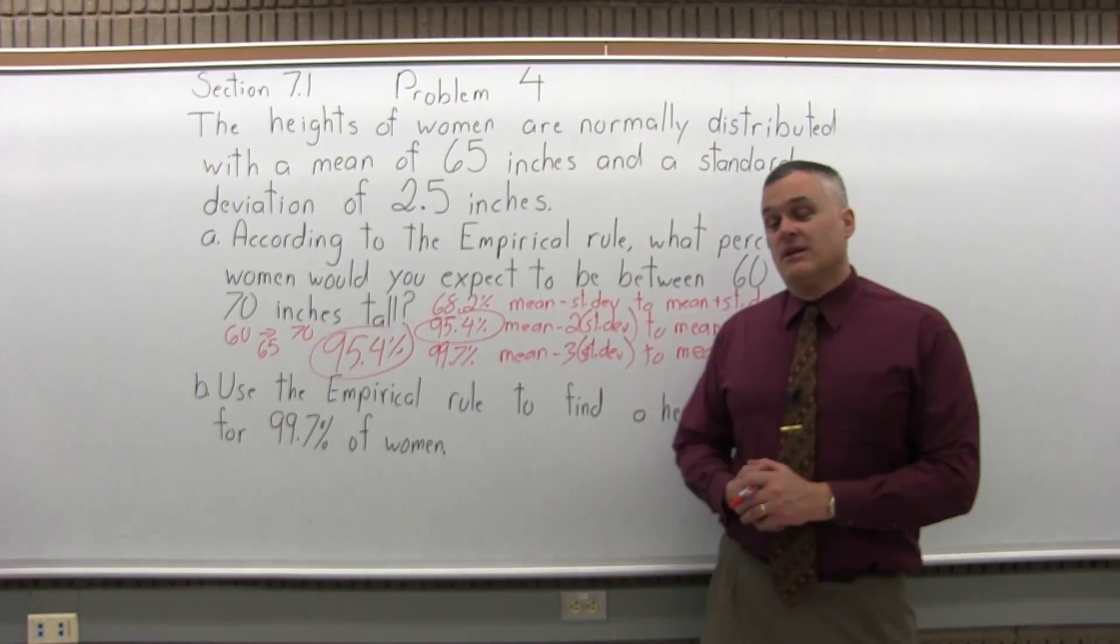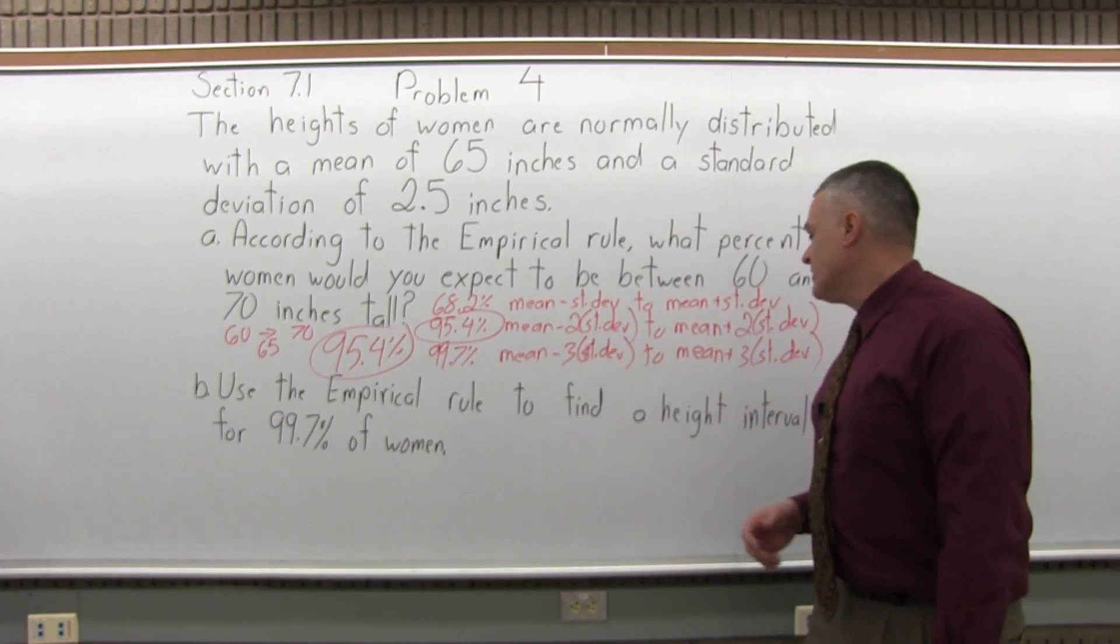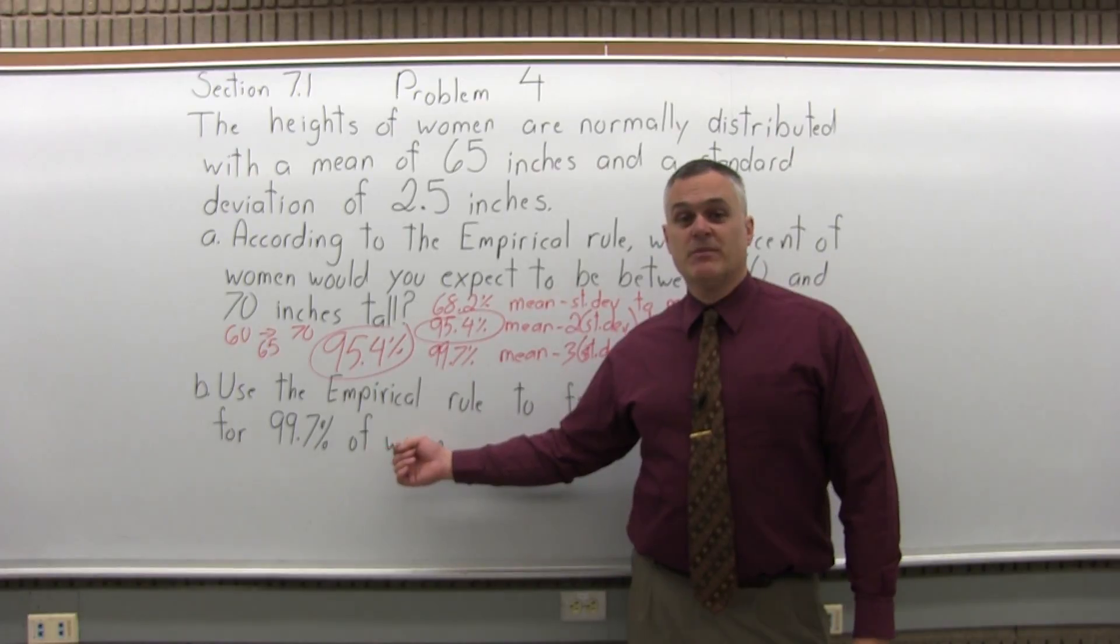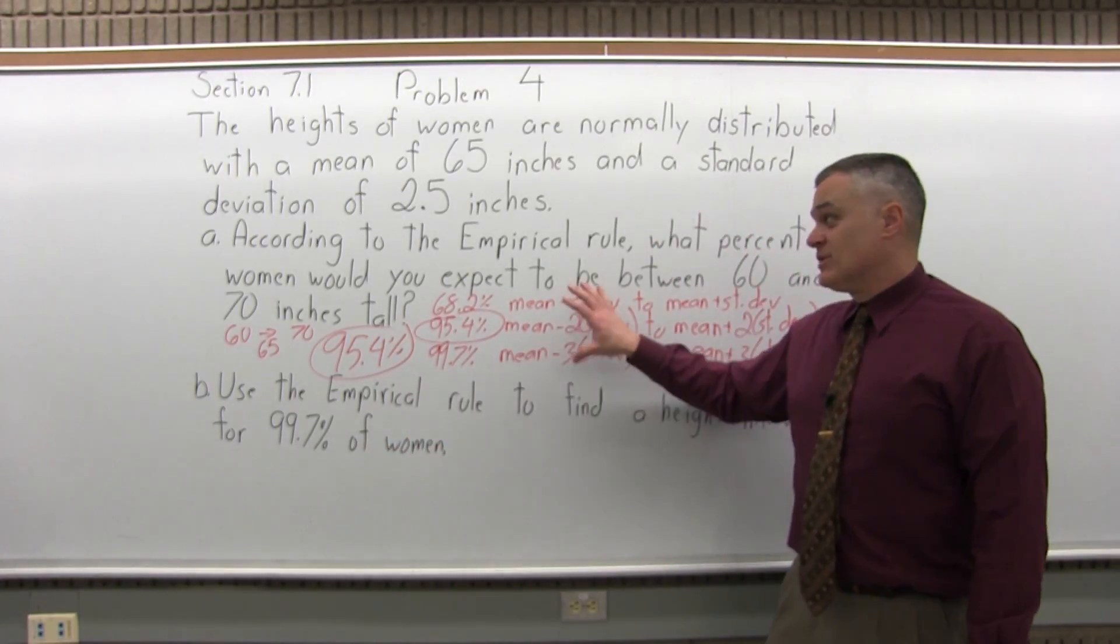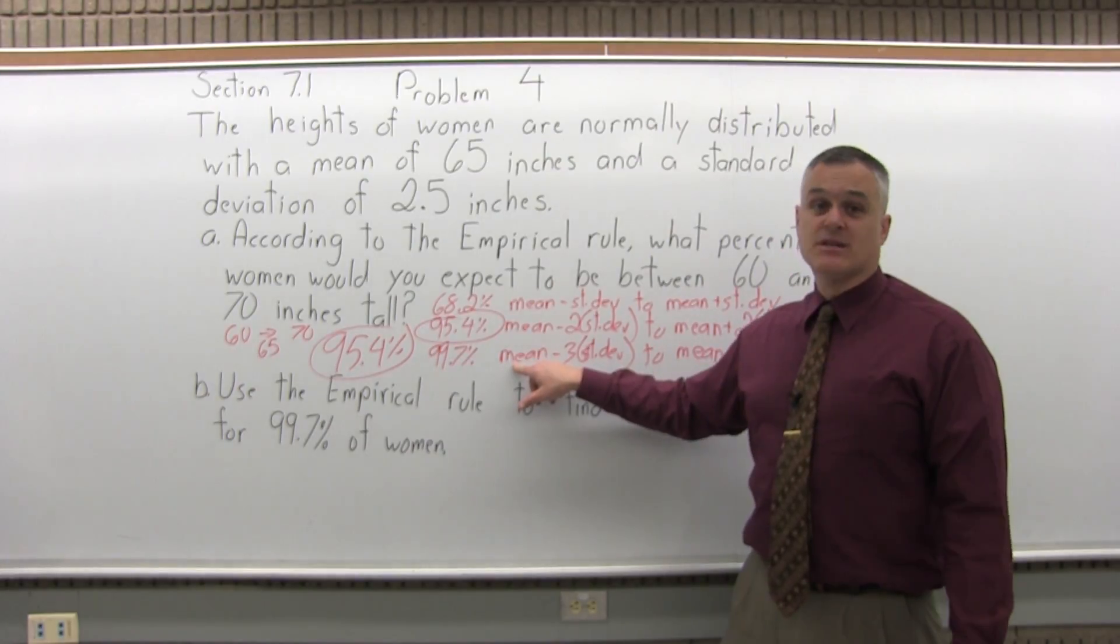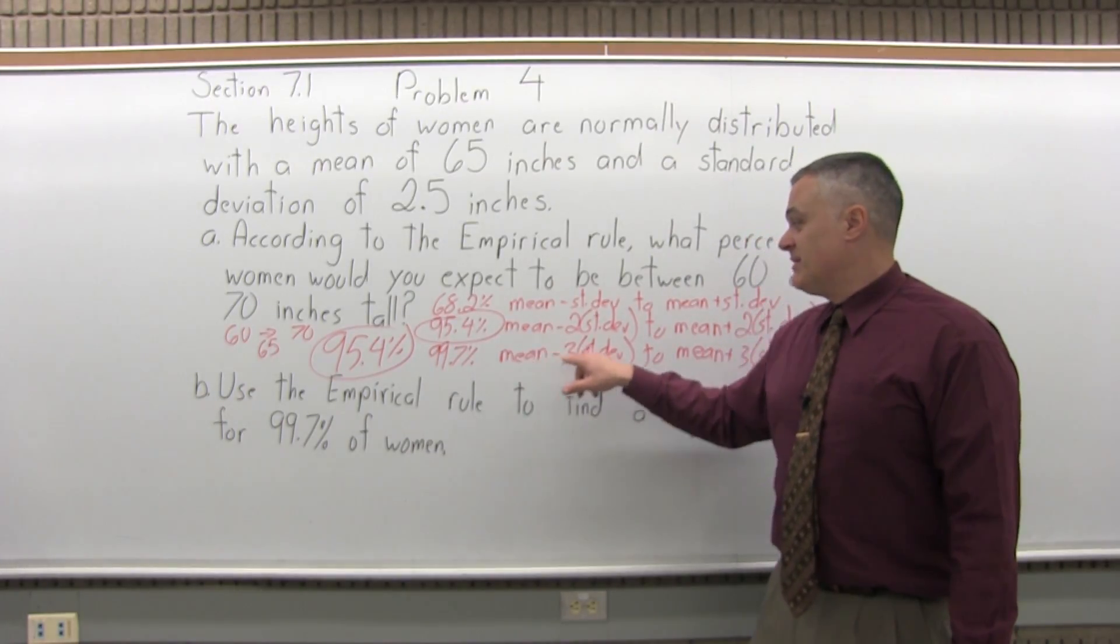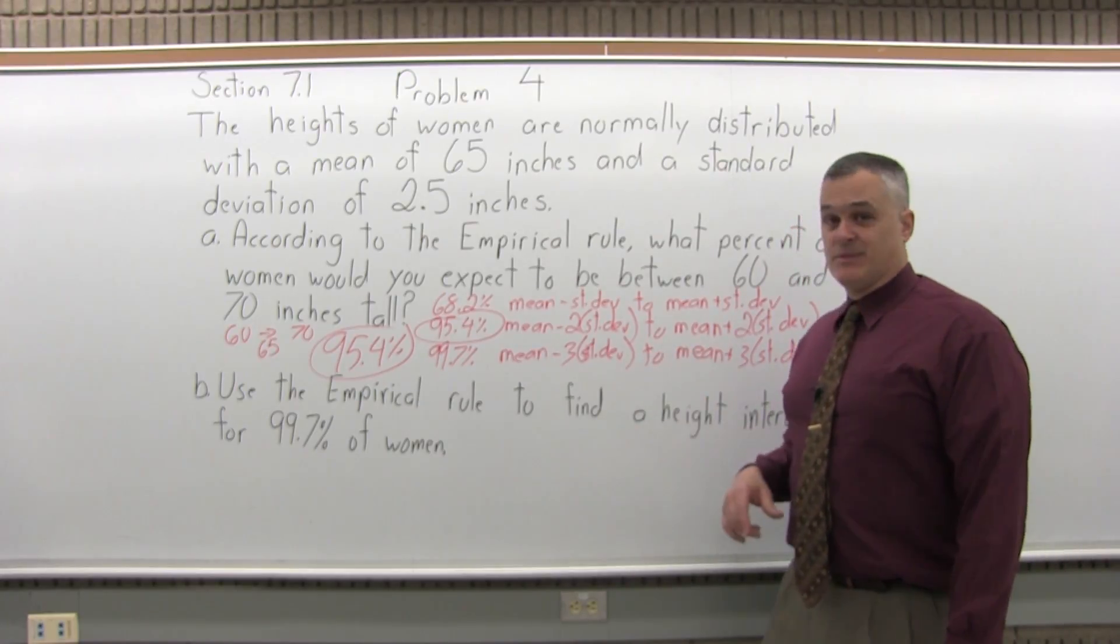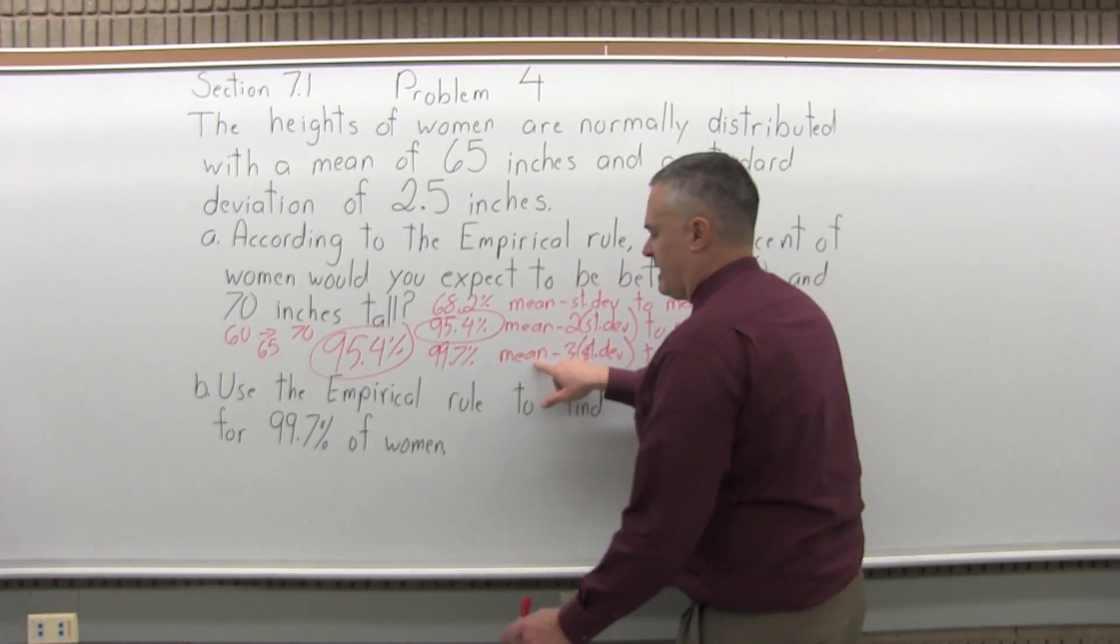Now for B, it says use the empirical rule to find the height interval for 99.7% of women. The 99.7% is the largest of the three intervals. It goes from the mean minus three times the standard deviation to the mean plus three times the standard deviation. So let's fill that out.